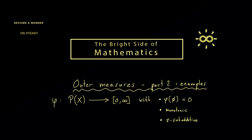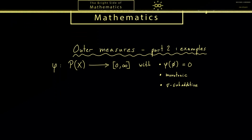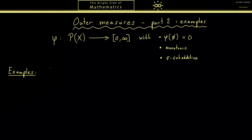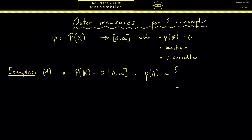We discussed that last time, so we can immediately start with the examples. I want to show three examples where the last one is the important one, but let's start with two simple ones first. A good starting point is to choose the real numbers as our set X, and then define an outer measure where the first property is immediate: phi of A equals zero if A is the empty set, and one if A is not the empty set.